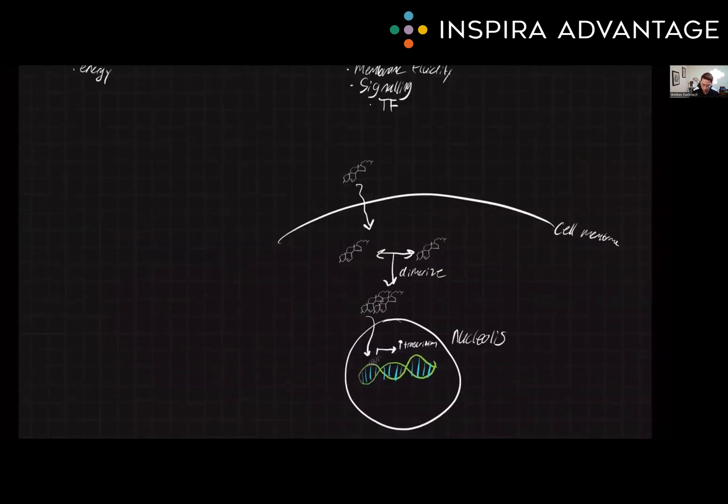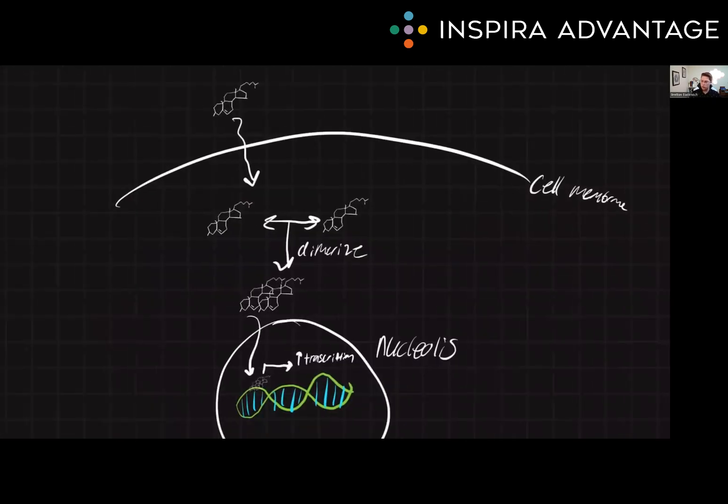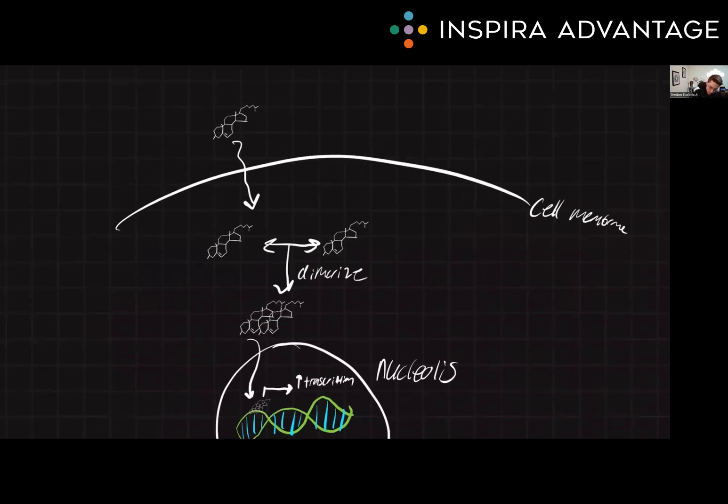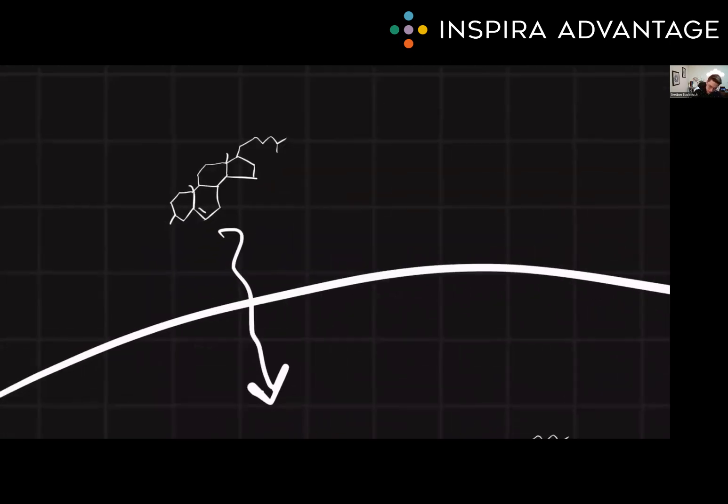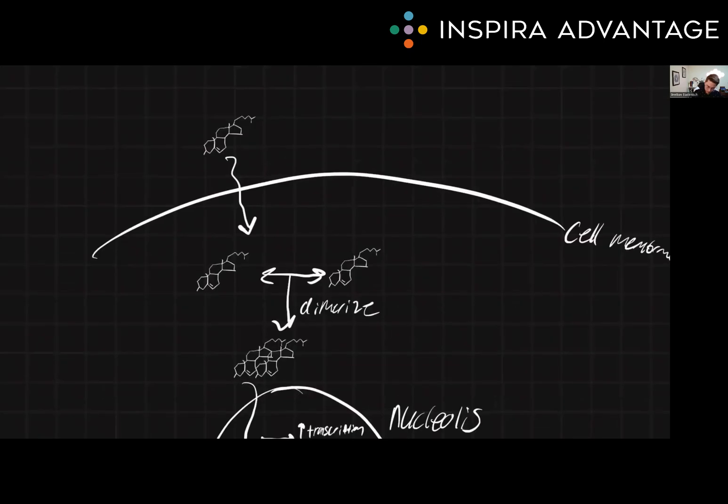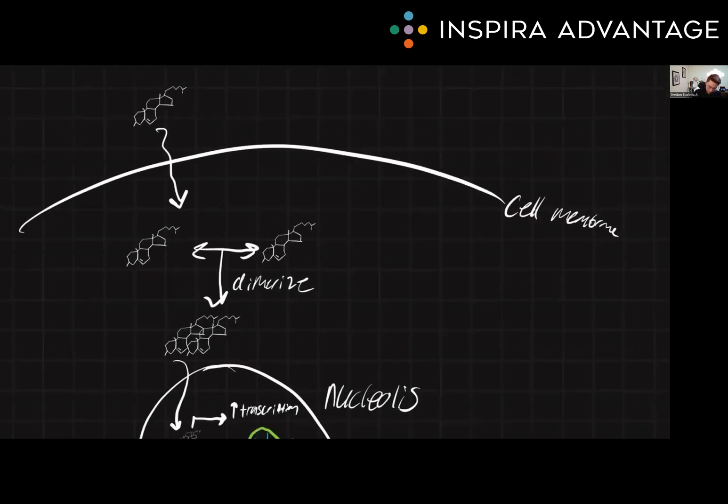Cholesterol also has an interesting role in signaling. Cholesterol, because it is non-polar, can easily cross the lipid membrane. Within the cell, the lipid molecule is going to find another one, the cholesterol or cholesterol derivative, and bind together. We call this dimerization. So now we essentially have two cholesterols bound together.